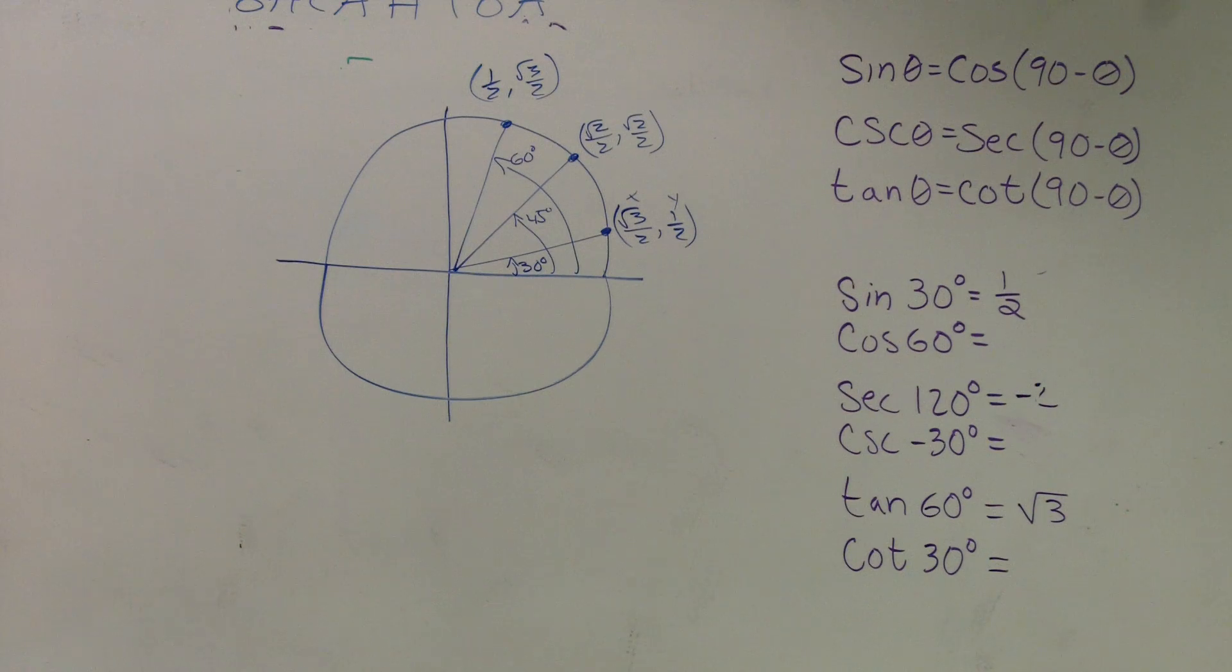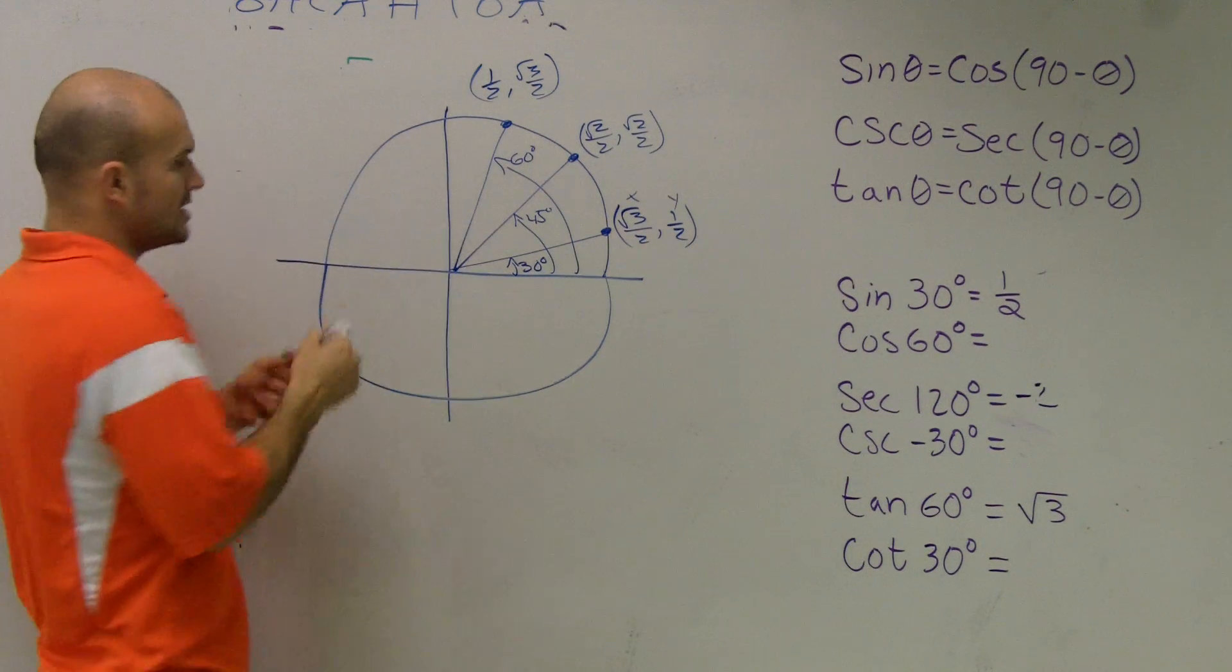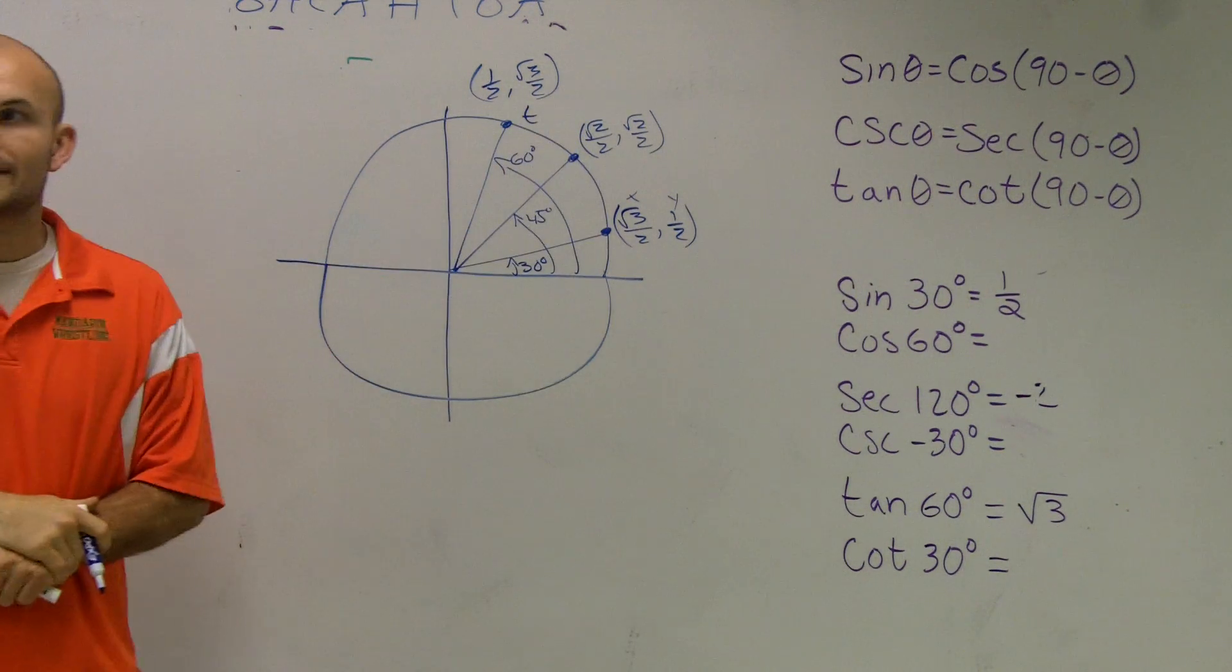Now, here's where the co-function identities come through. Remember, when we're talking about a point T, T represents a point on the line.